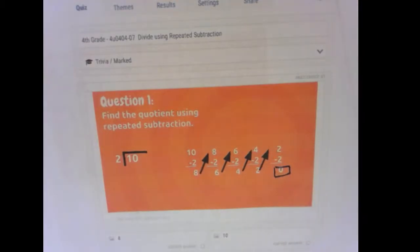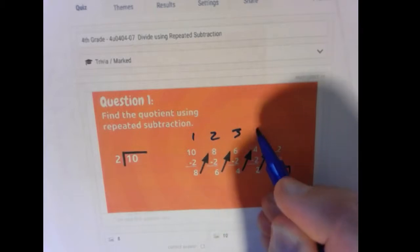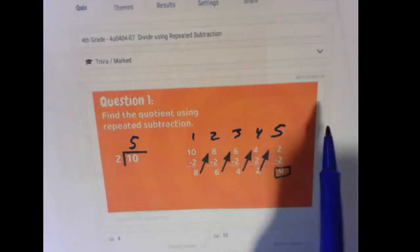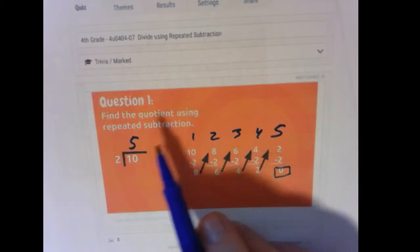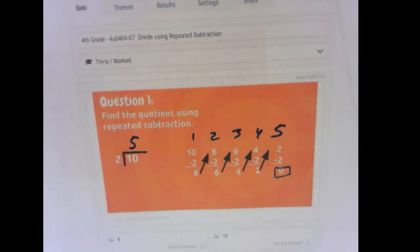So how many times was the subtraction done? 1, 2, 3, 4, 5. And you probably knew that already. 10 divided 2 ways is 5. That's how we can understand how they're connected, subtraction and division. So division is the same as using repeated subtraction.